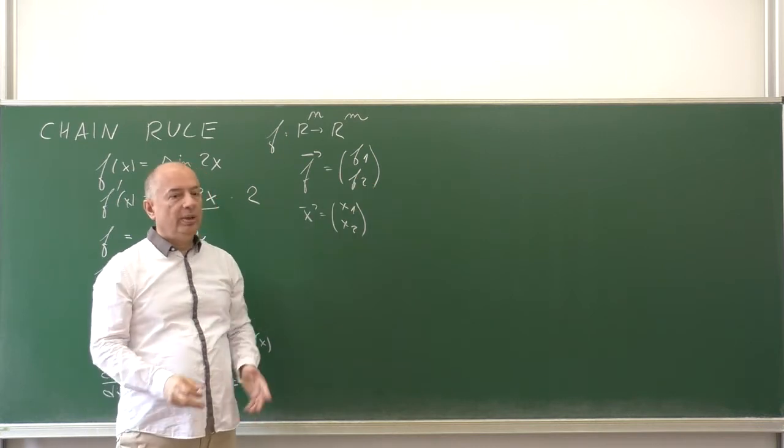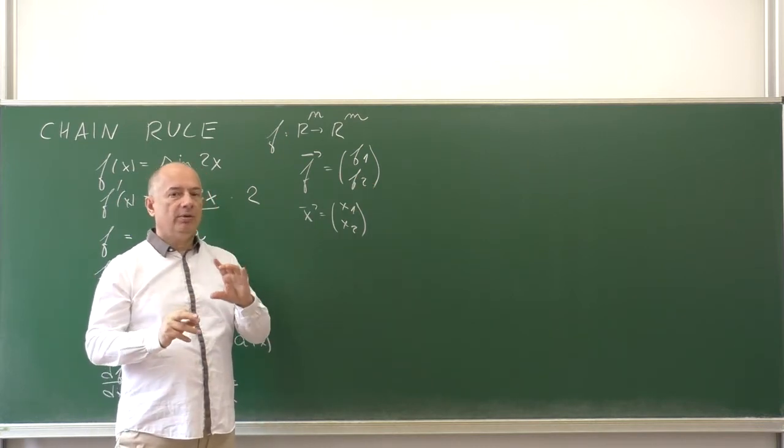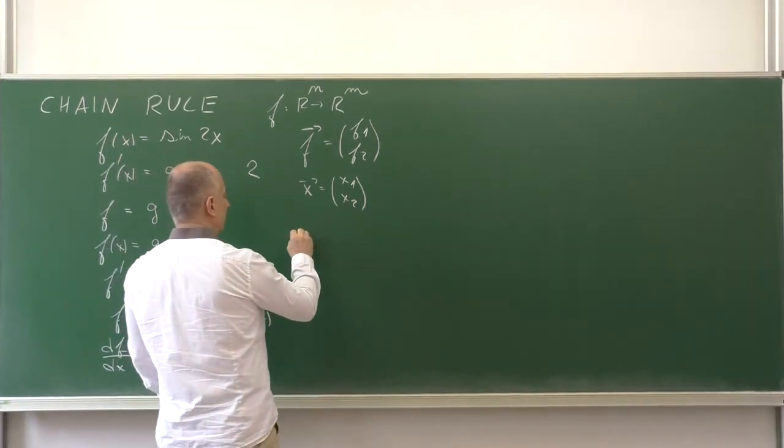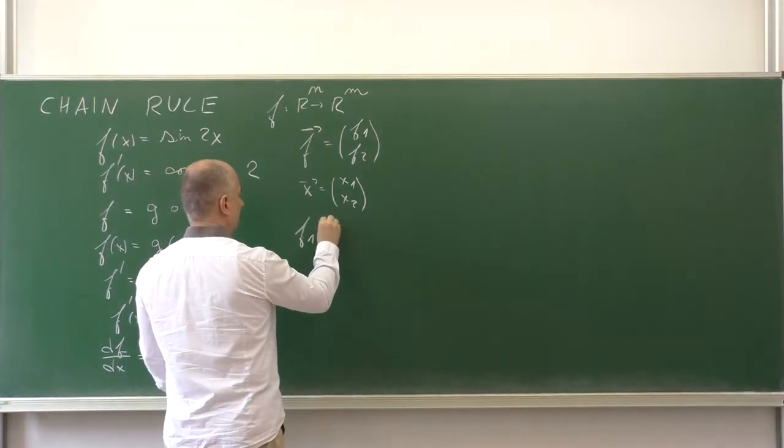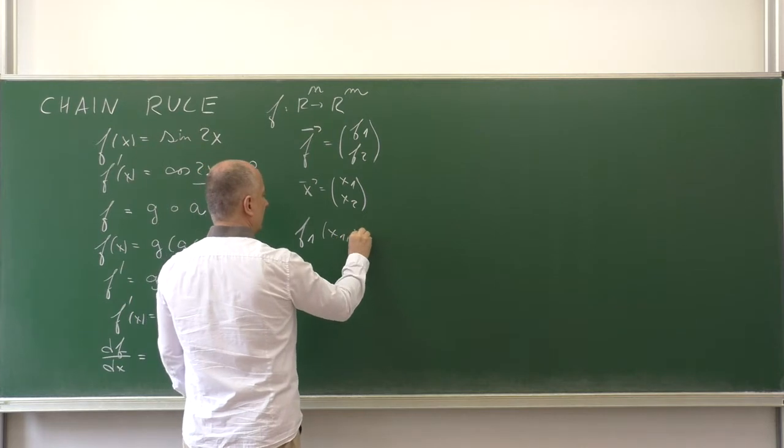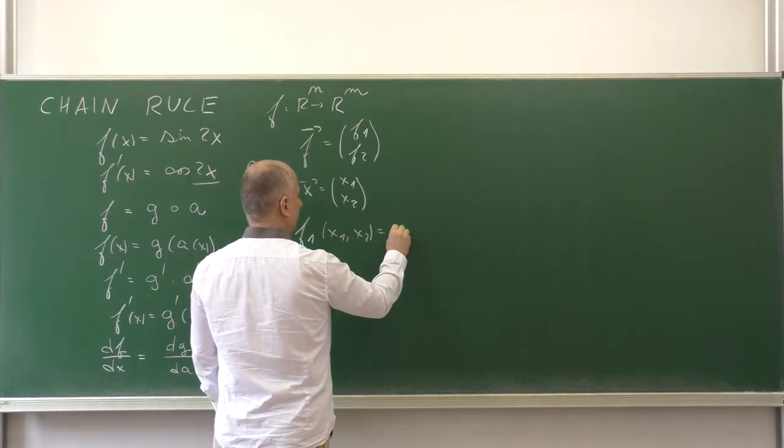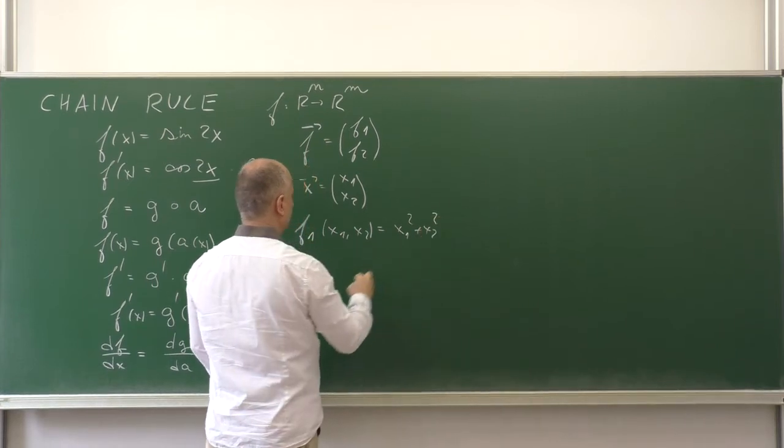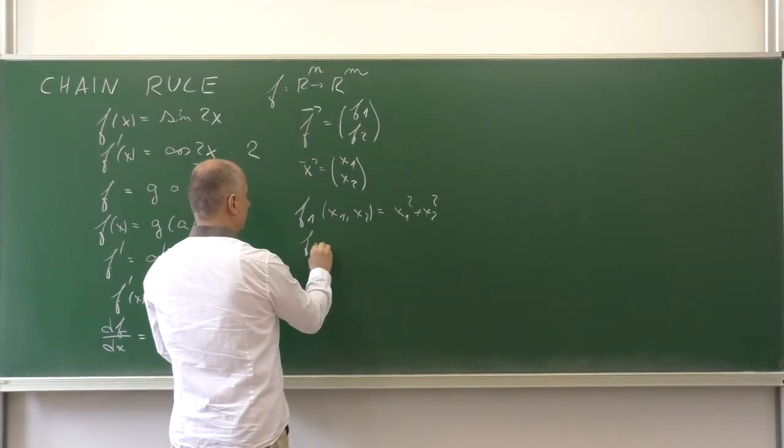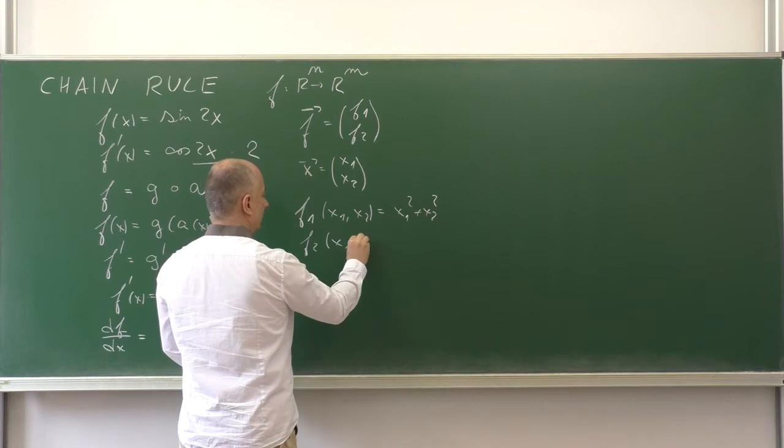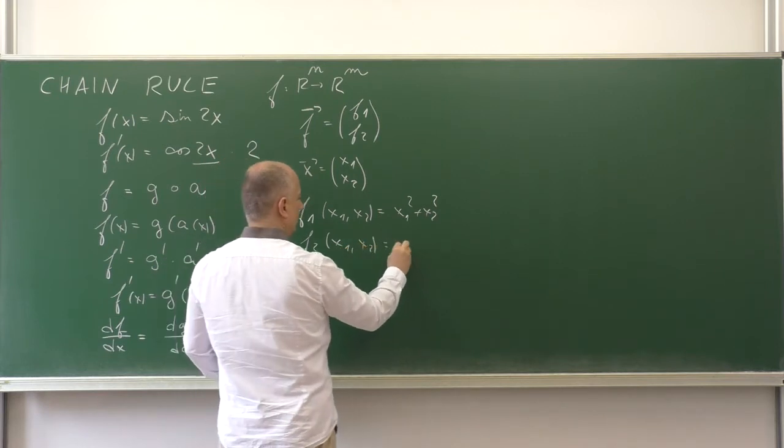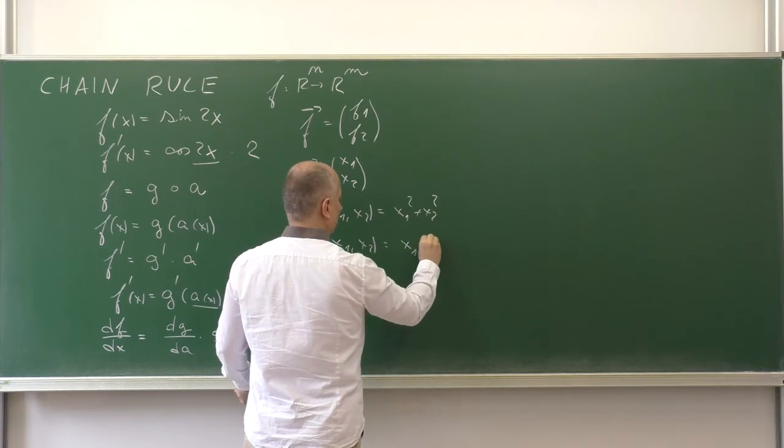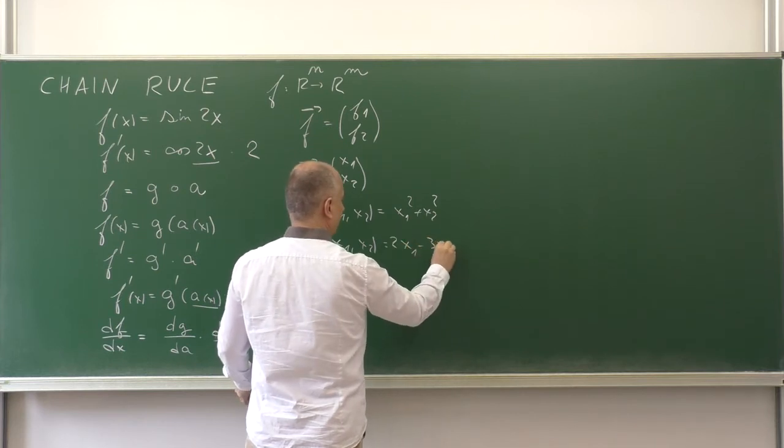An example of such a function may be f₁(x₁, x₂) = x₁² + x₂², and f₂(x₁, x₂) = 2x₁ - 3x₂.